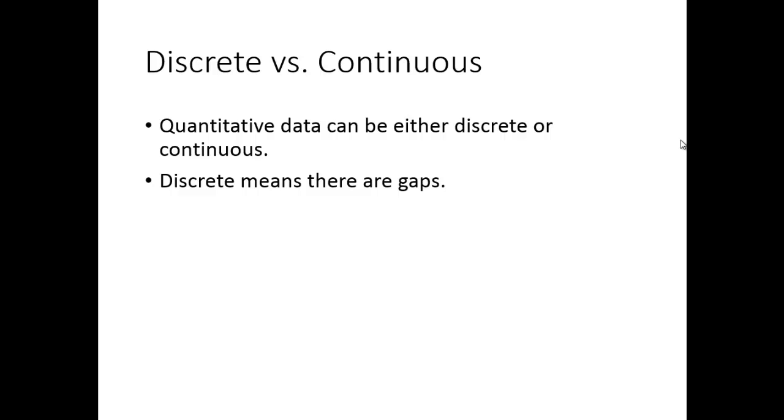Another sort of dichotomy or splitting of types of data that we deal with is discrete versus continuous. This is a general mathematical thing, discrete versus continuous. So generally when we're talking about quantitative data, it can be either discrete or continuous. There's formal mathematical definitions you could give here. We're just going to kind of do this from a rough perspective here. Again, this may create certain gray areas we'll talk about here in a bit. Discrete generally means there are gaps in the data.